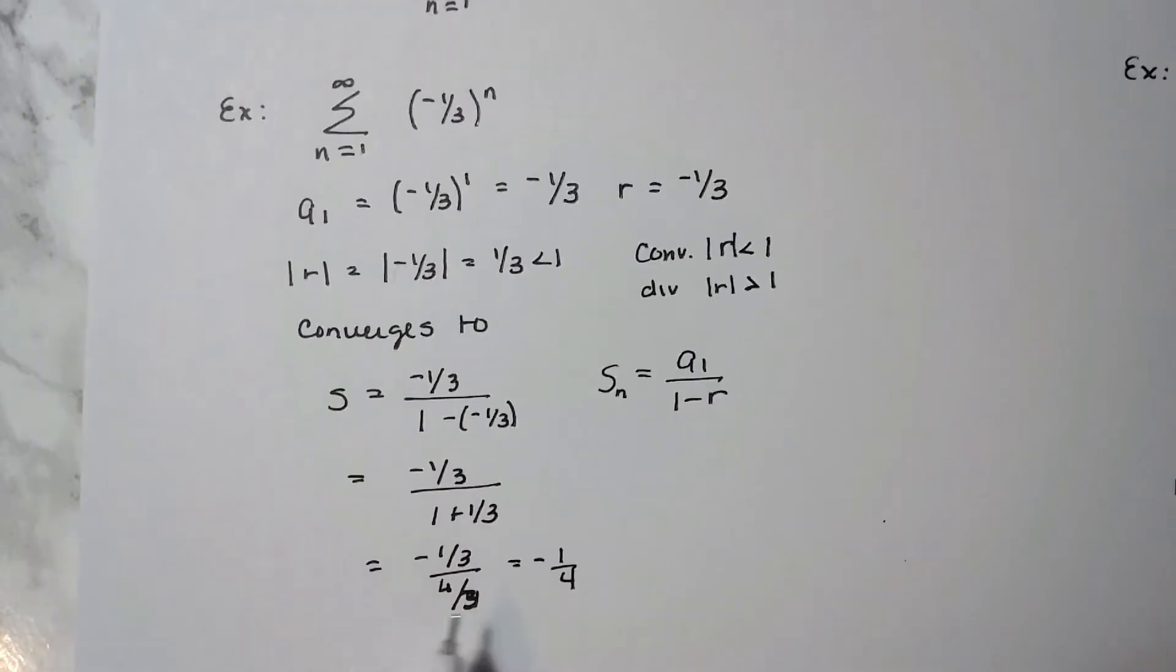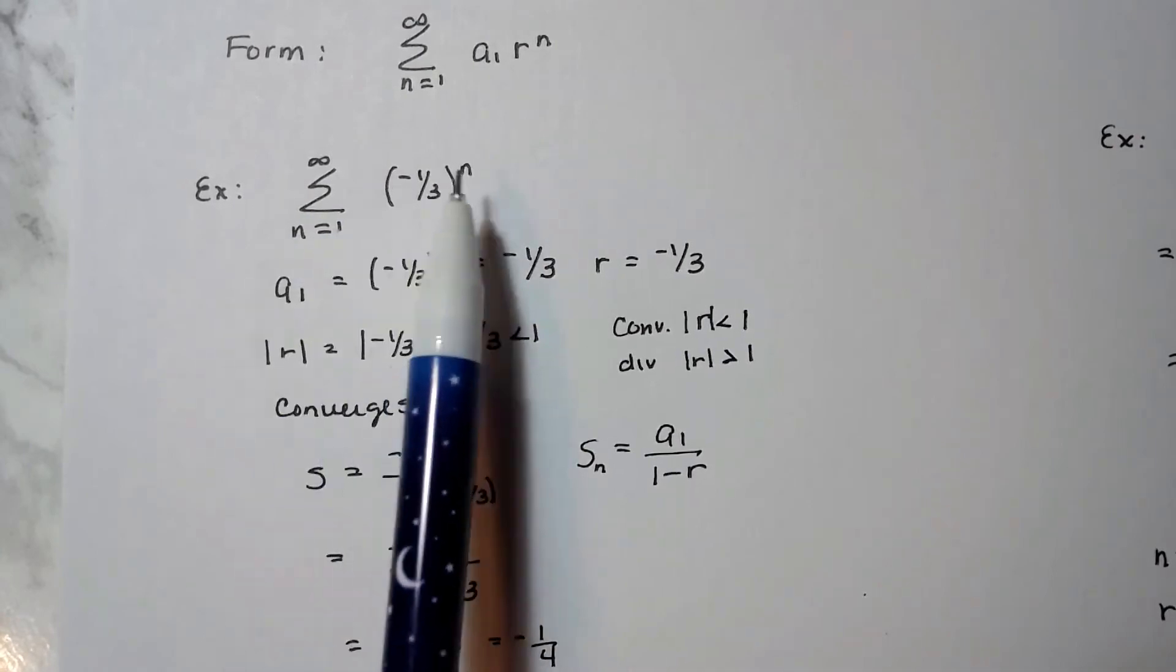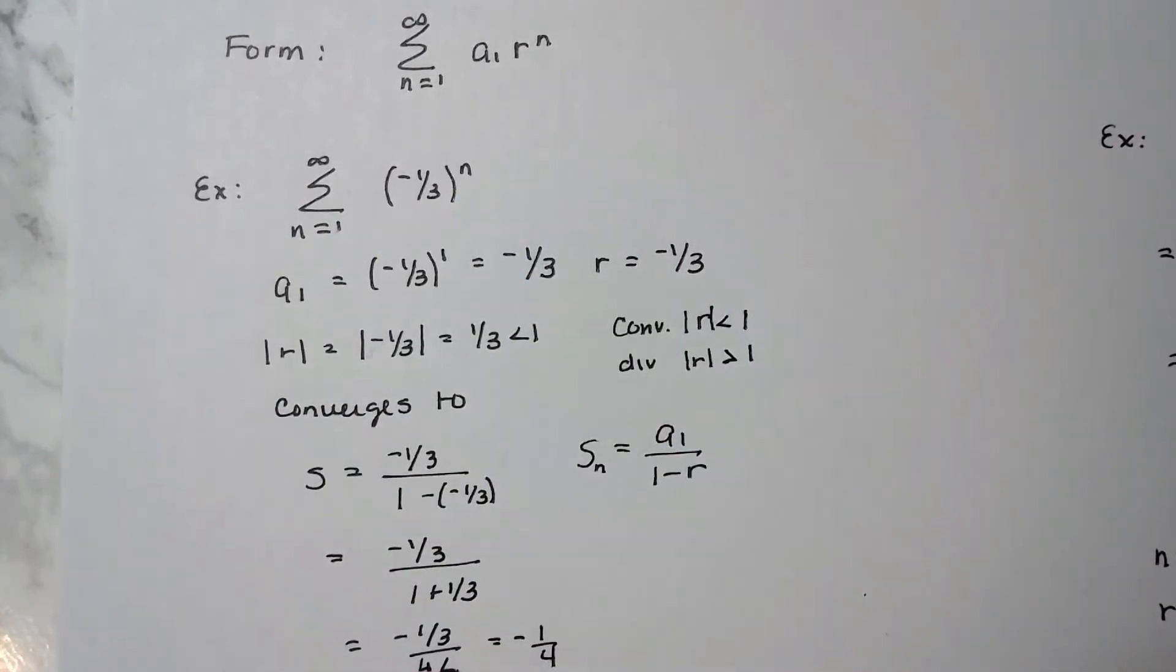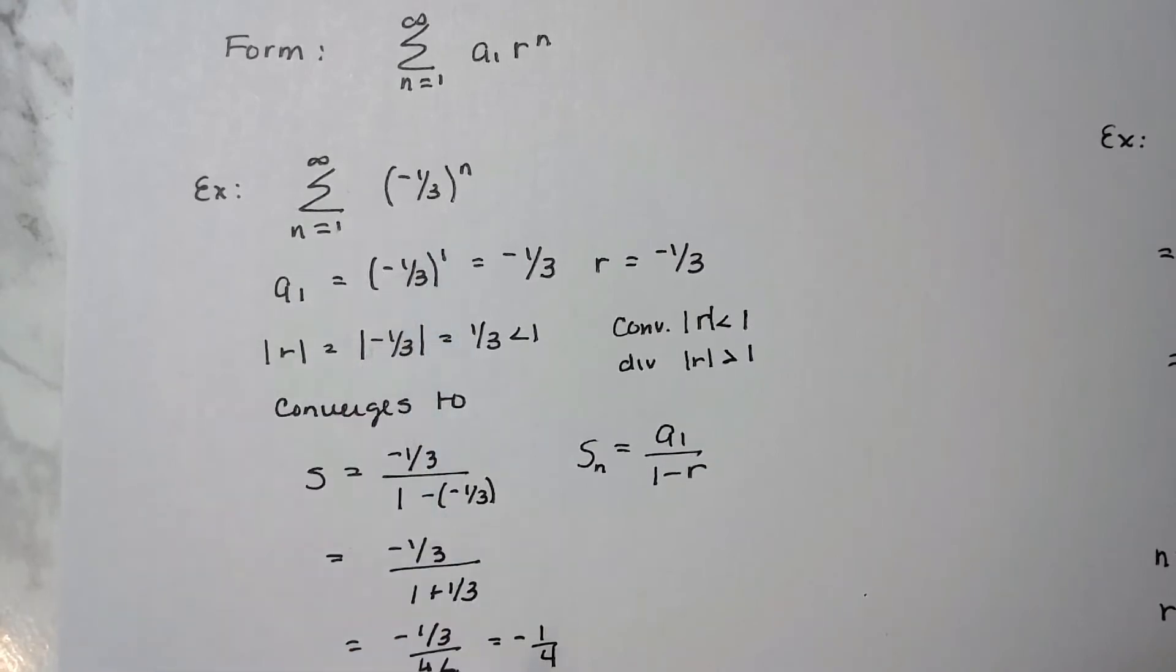So I said this converges to whatever number turns up here, and I just plug in the values and get a negative 1/4. So the idea is that if I plug in a 1 and a 2 and a 3 and a 4 and I generate some terms in that series, what I'm going to notice after a while is that the value is going to get closer and closer and closer to negative 1/4.